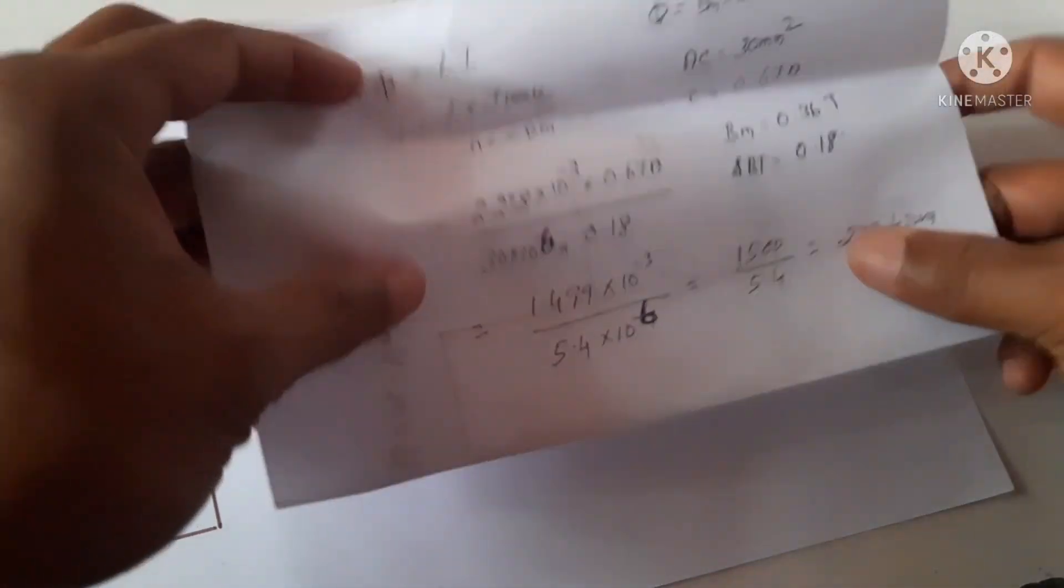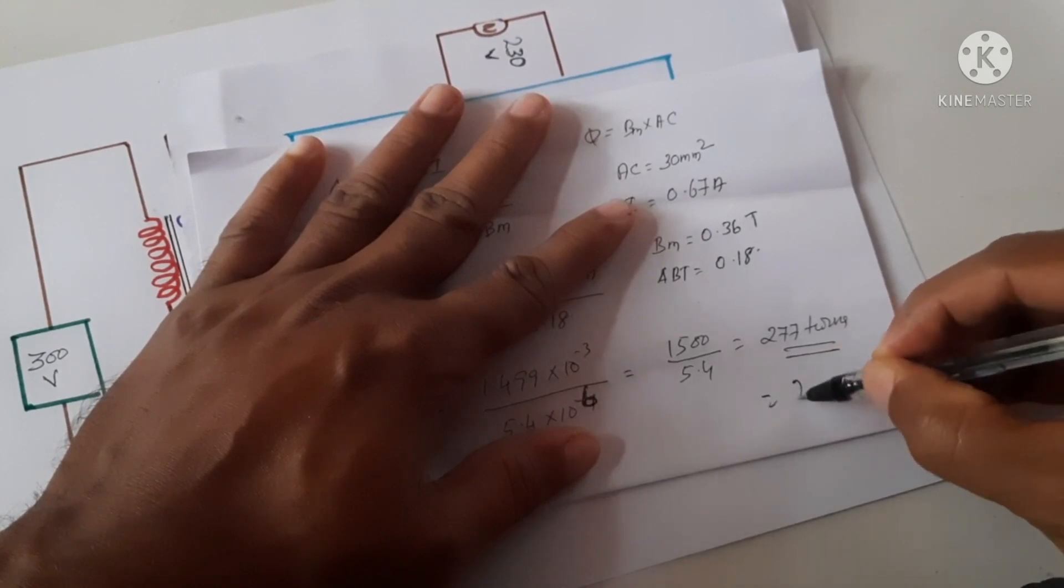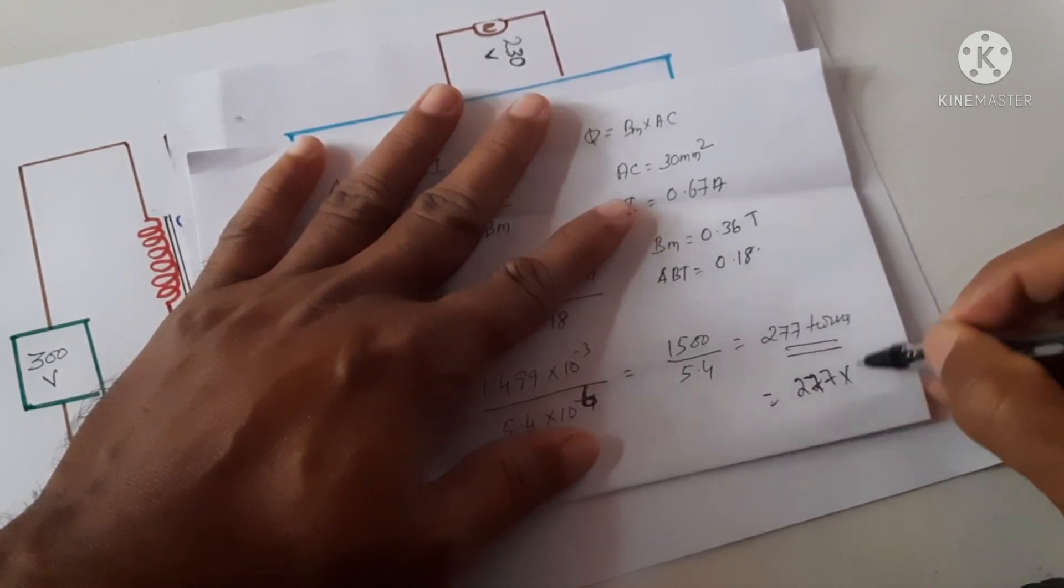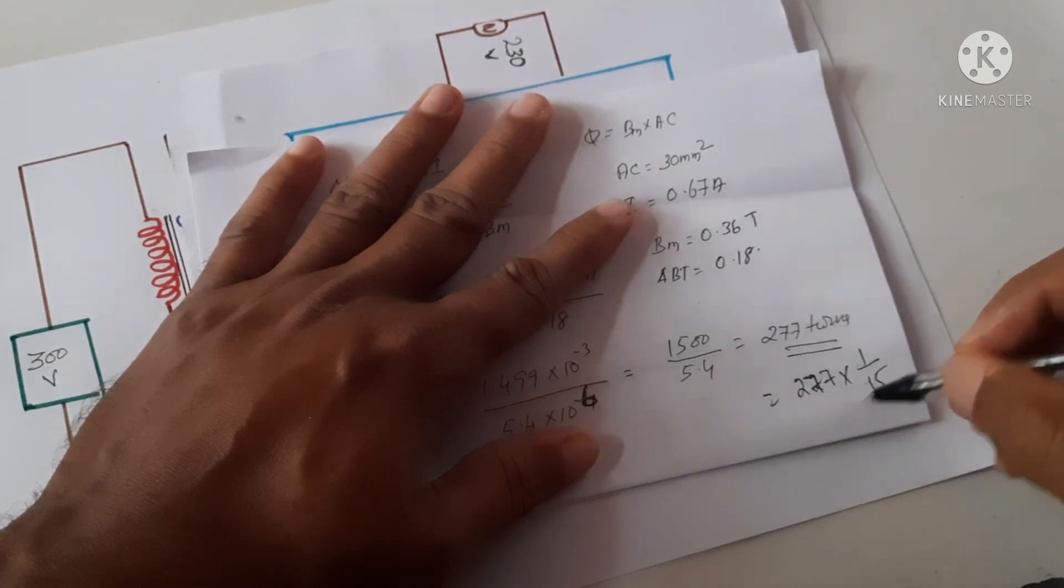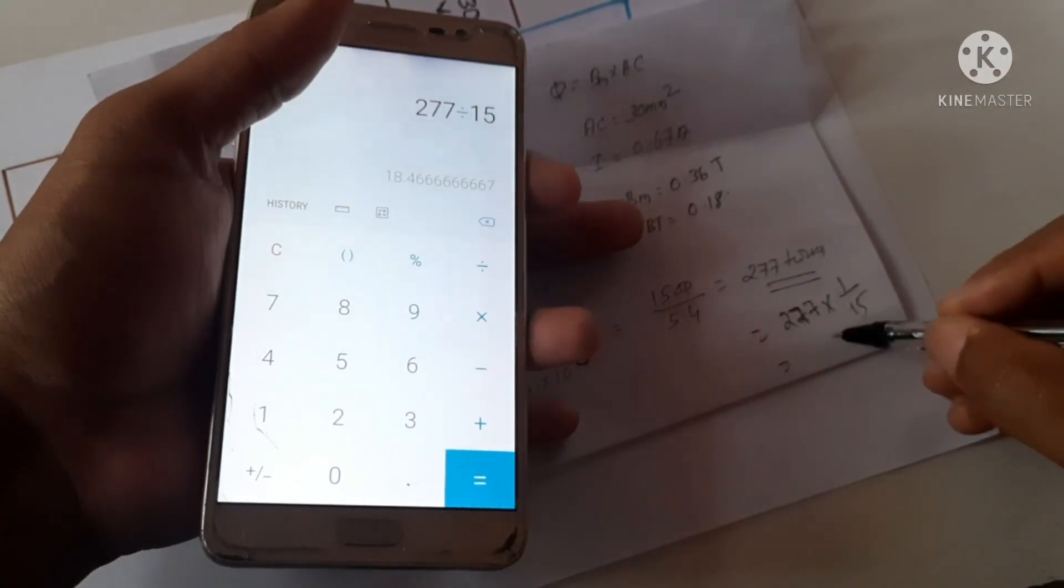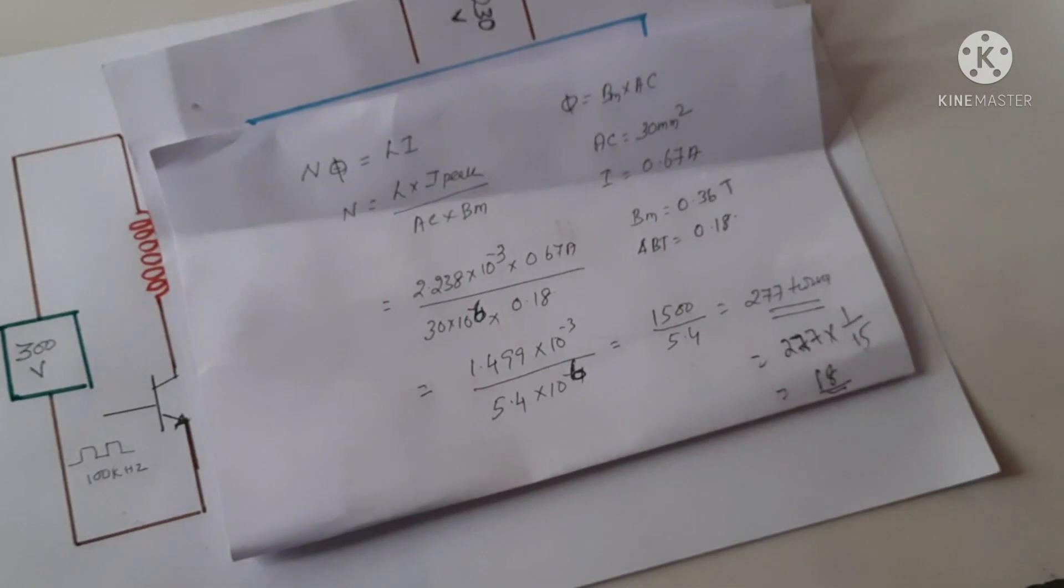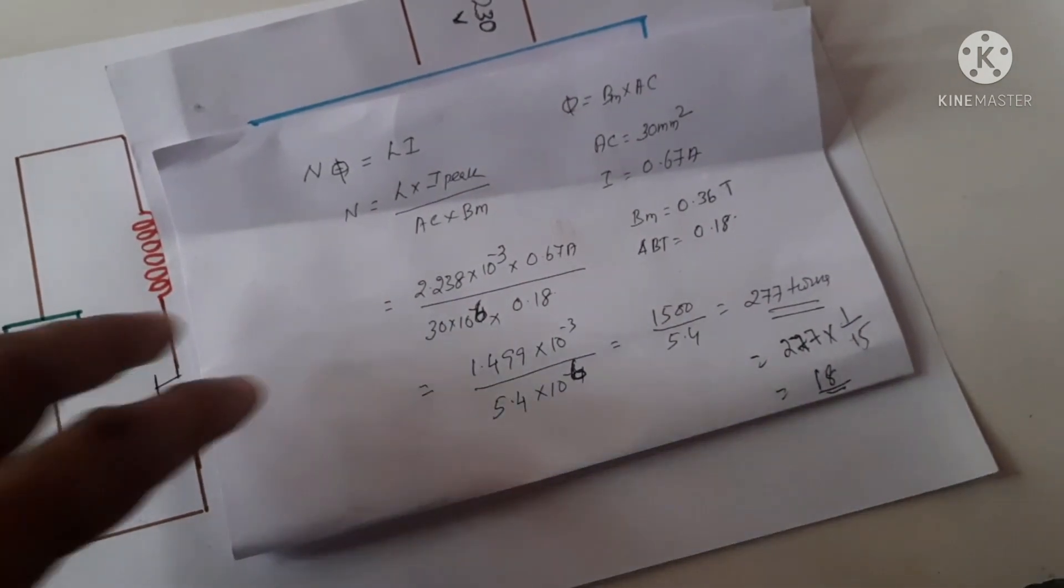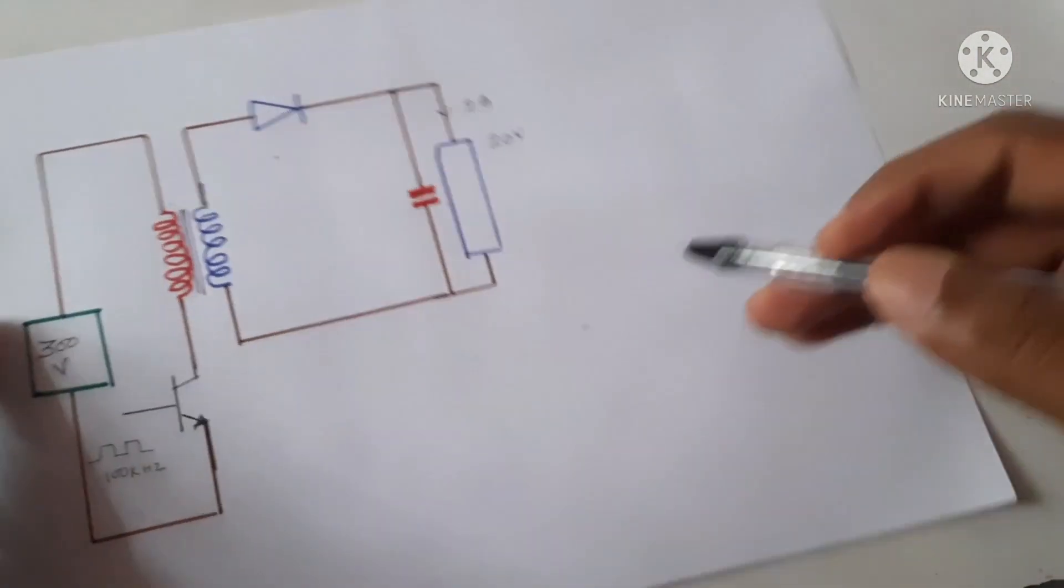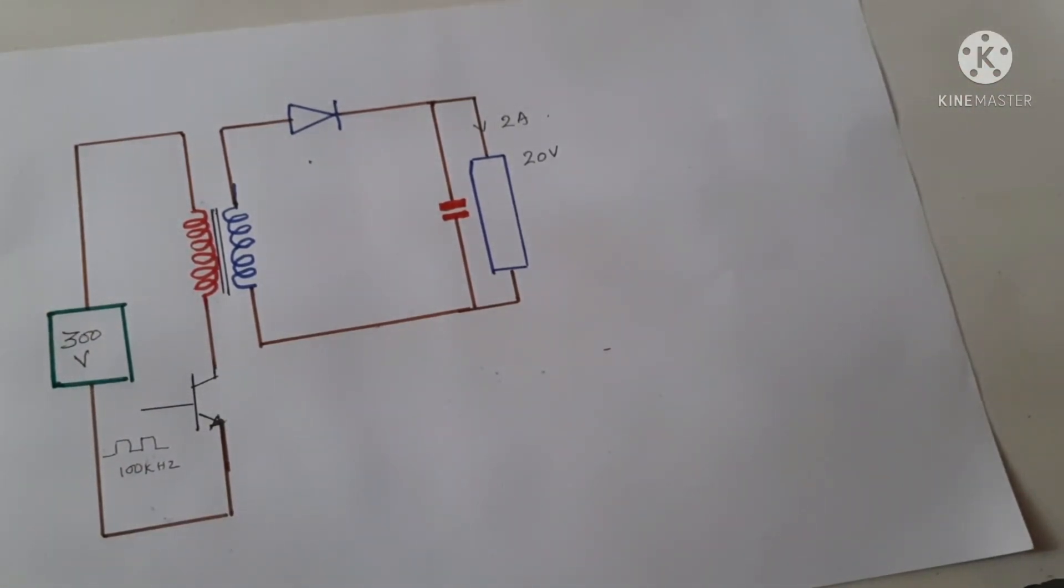We have already calculated the primary turns are 277. So 1 by 15th of the turns will be at the secondary, that will be around 80 turns. Around 80 turns we need to produce 20 volts of output voltage.